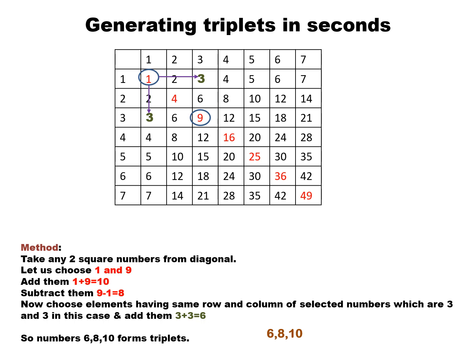As we selected 1 and 9, so across the row and column of 9 we will get 3 when we are moving towards right, and when we are moving downwards we will again get 3. So add these two numbers and you will get 3 + 3 = 6. So now the numbers 6, 8, and 10 will form the triplets.